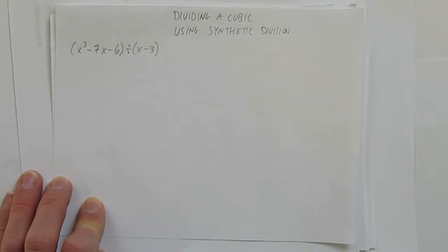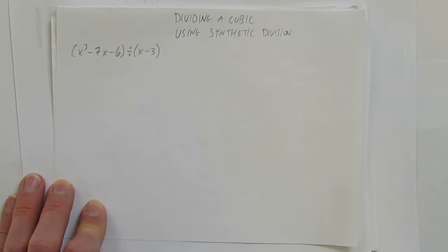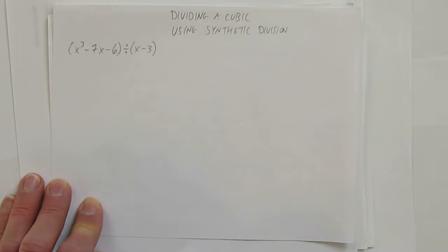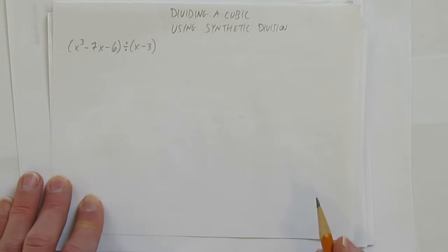In this video, we'll look at dividing a cubic using synthetic division. The cubic given is x³ - 7x - 6, and we're dividing it by x - 3.